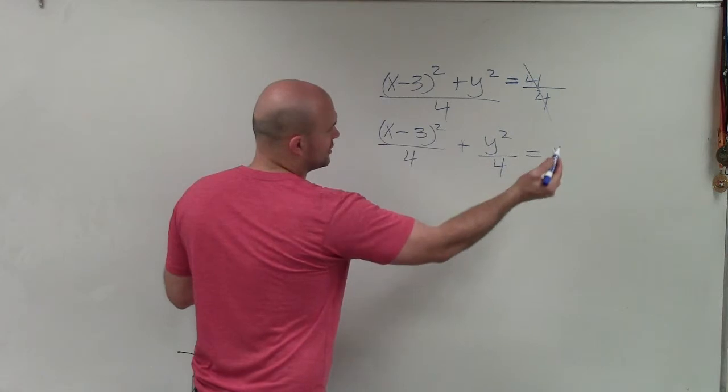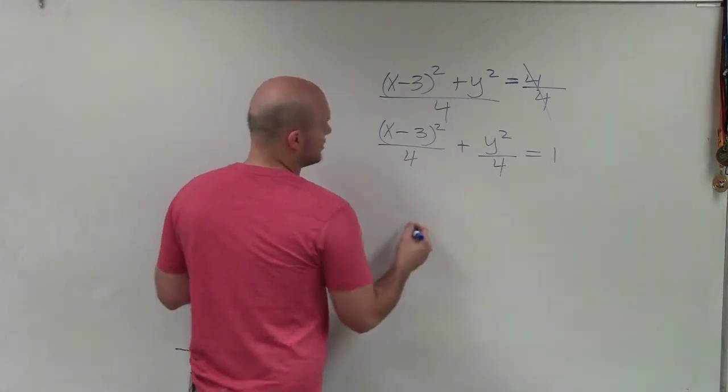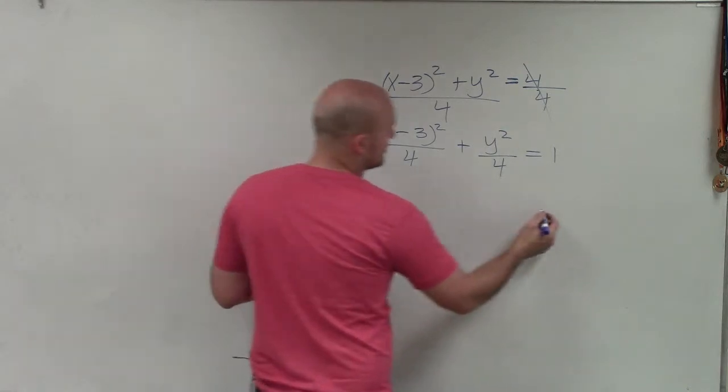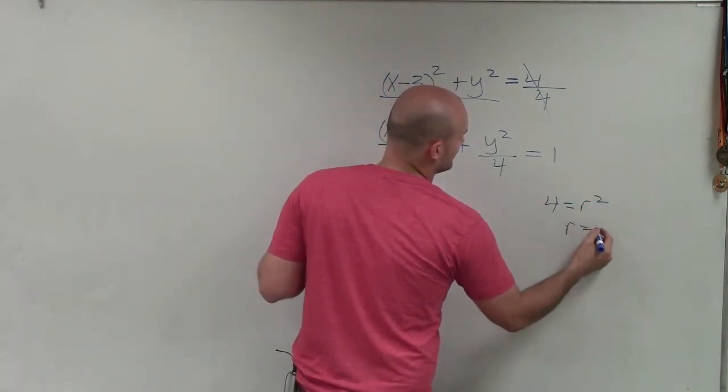So since our a and b are going to be the same, we can call them our r, which would be our r squared. And notice that 4 is going to equal r squared. So r equals 2.